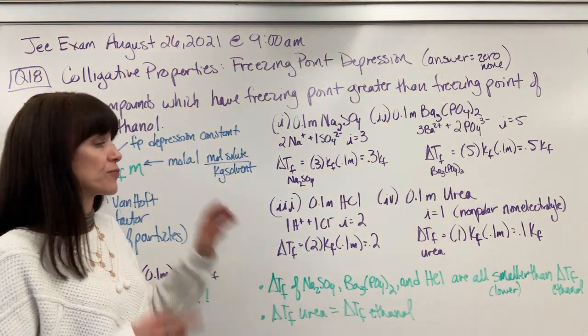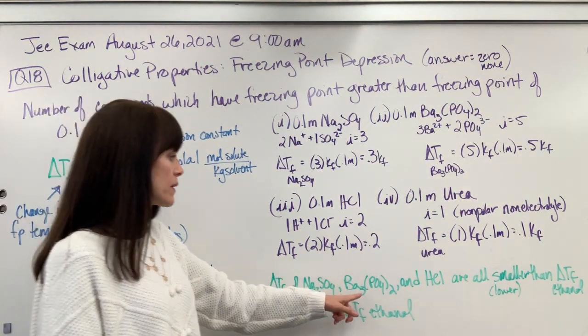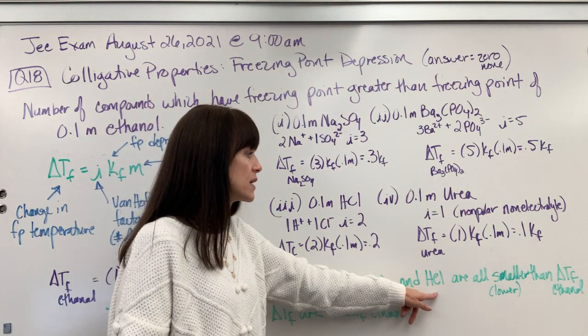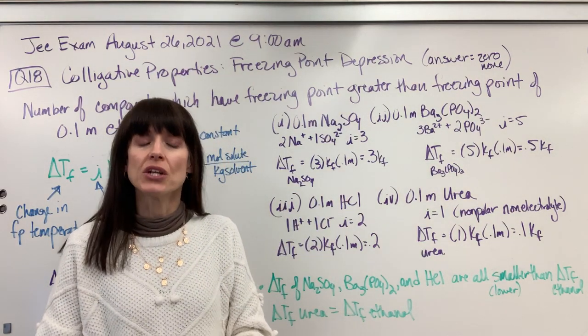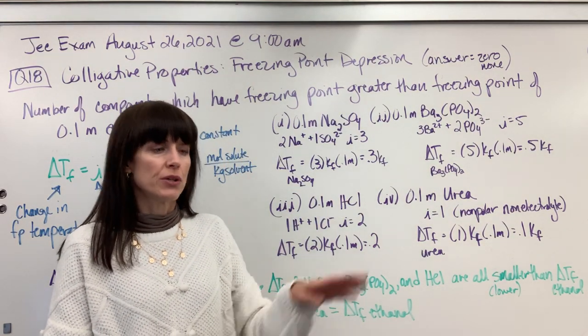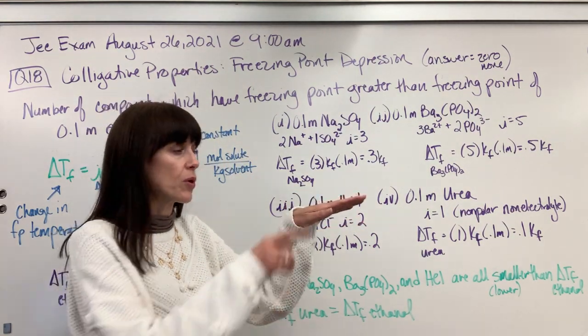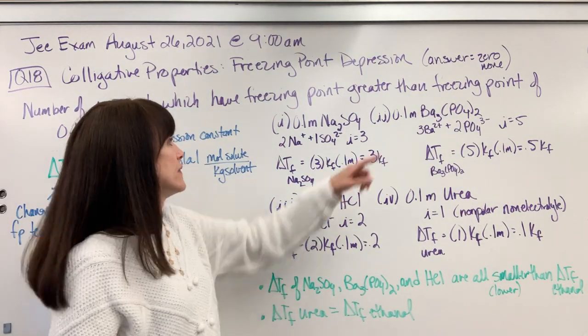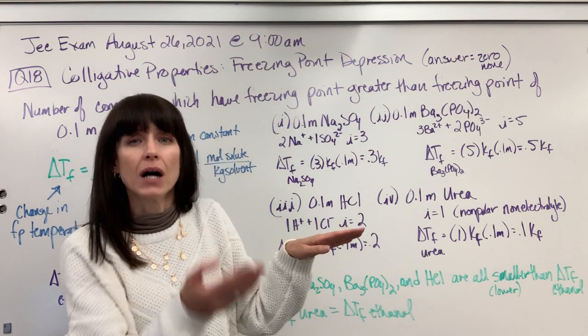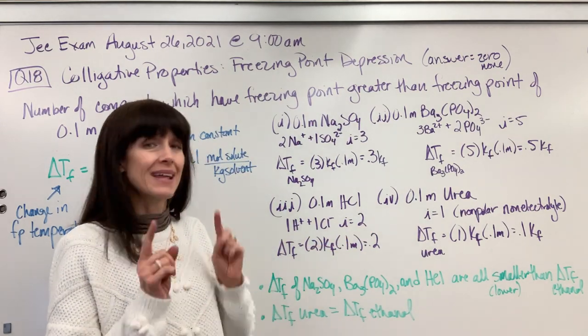The change in temperature for the sodium sulfate, barium phosphate, and the hydrochloric acid, those are all smaller. You have a bigger change in freezing point temperature. So you're going to take the pure freezing point and subtract the change. It goes that much lower.